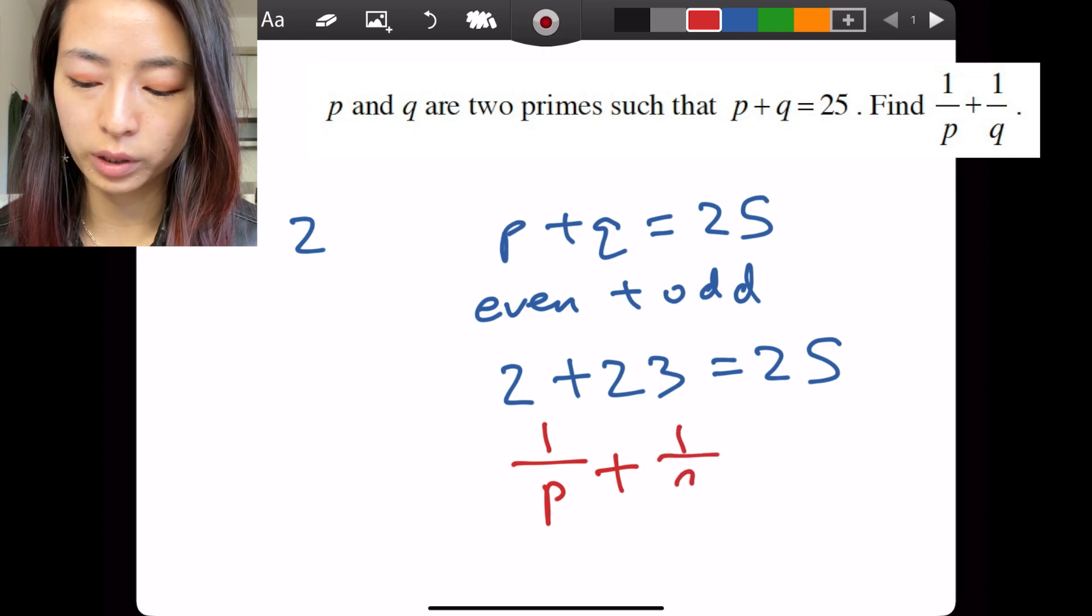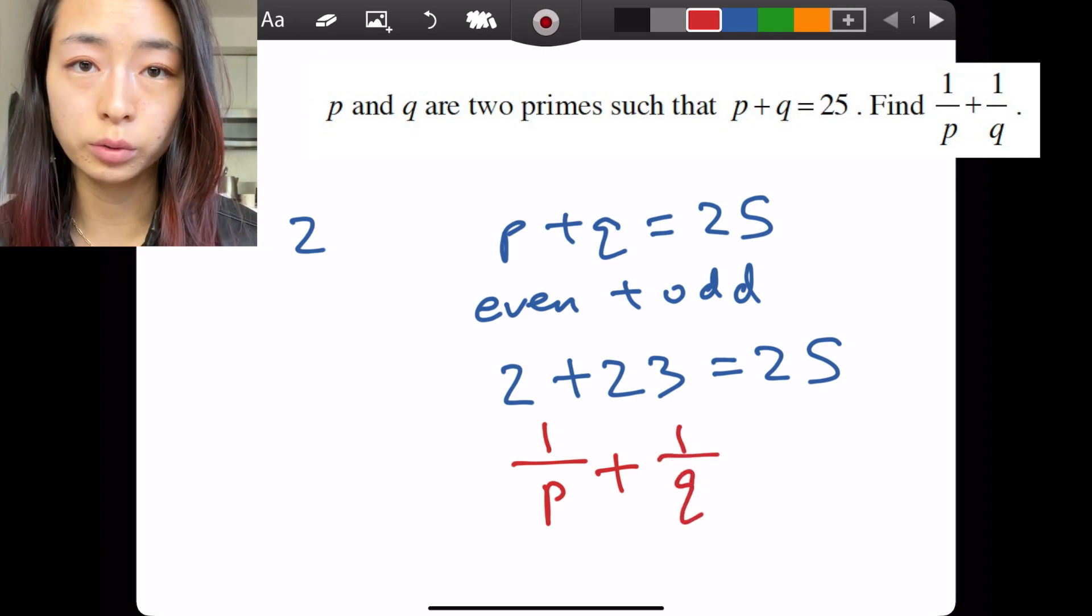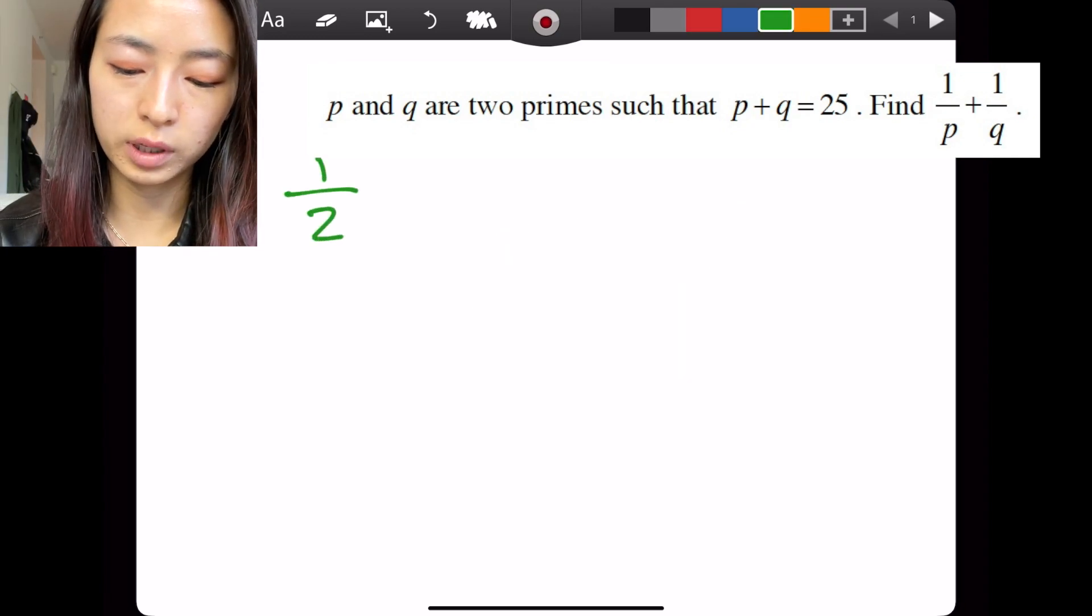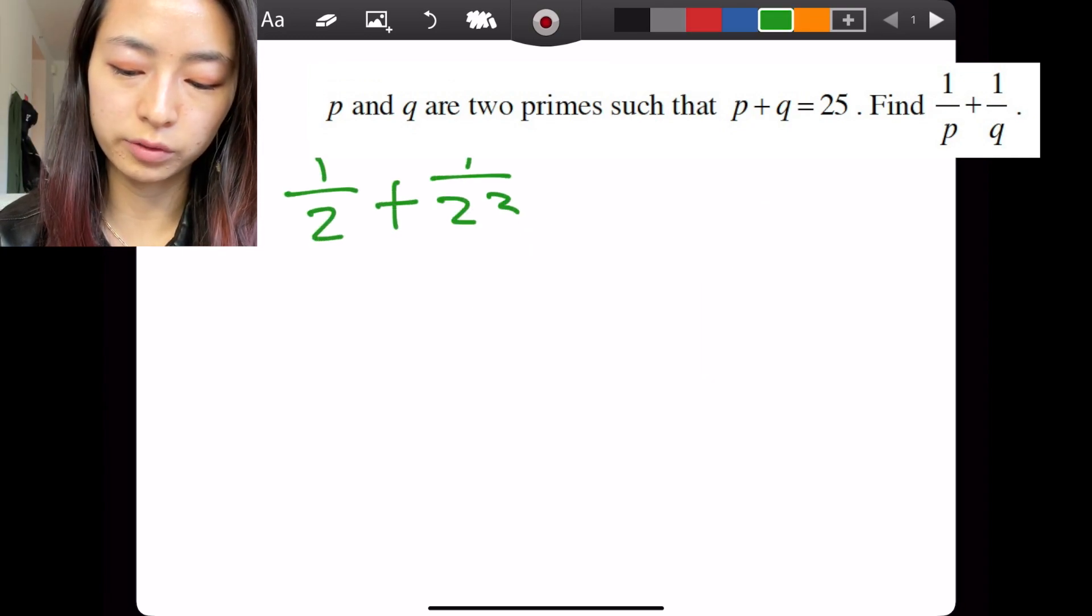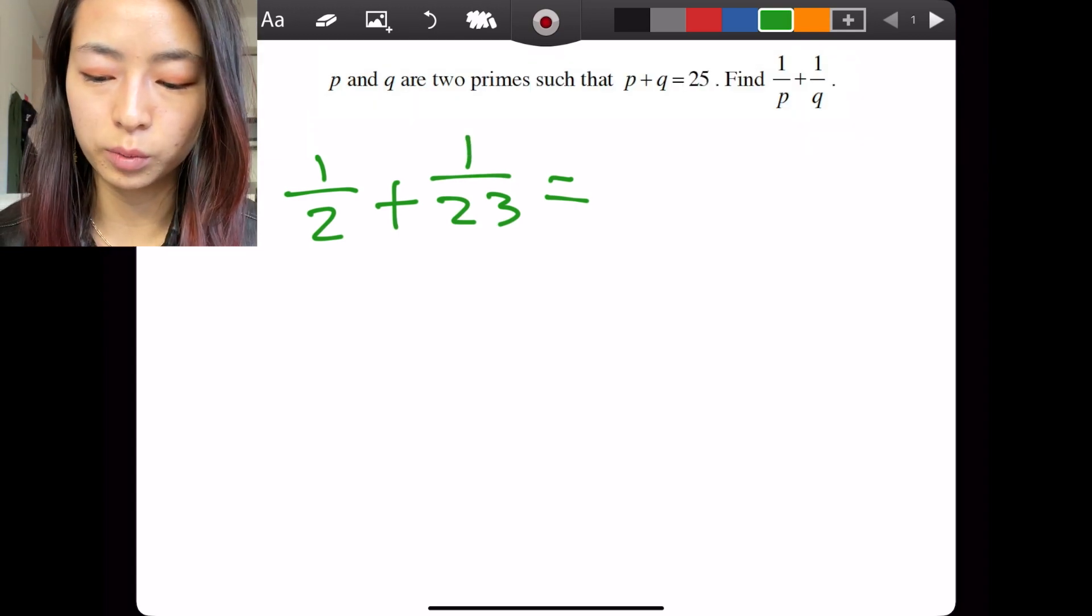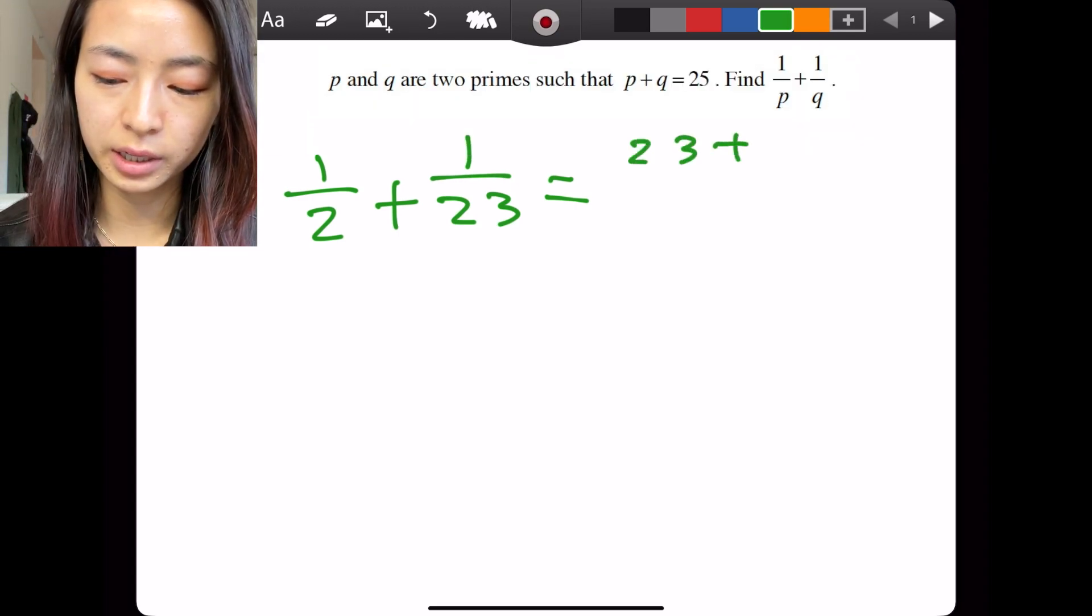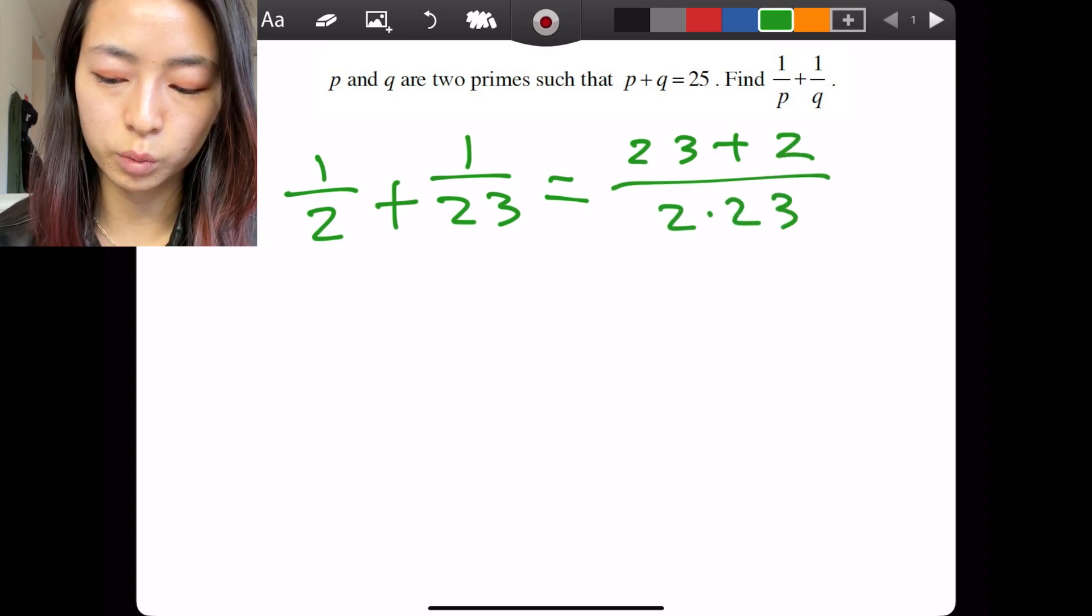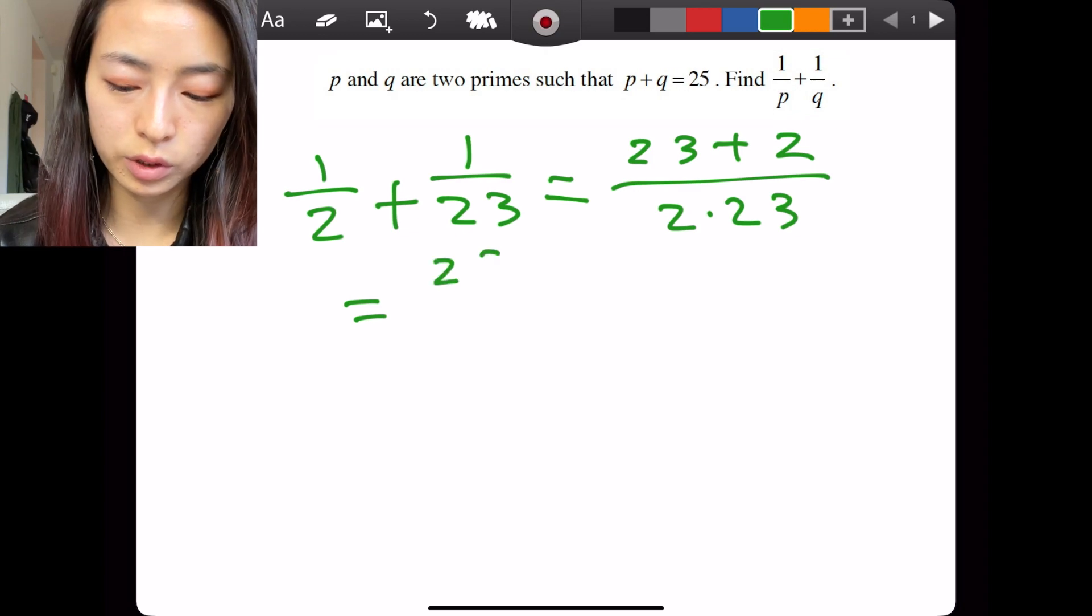The number we're trying to find is 1 over P plus 1 over Q. So if you switch them, it also doesn't matter. Therefore, all we need is 1 half plus 1 over 23. We need to make the denominator the same. So we have 23 plus 2 over 2 times 23, which equals 25 over 46.